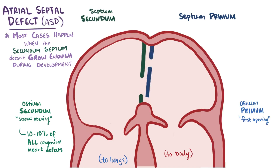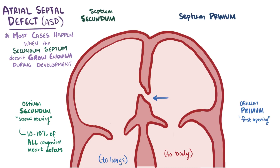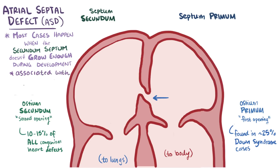Fewer ASD cases are due to the ostium primum, where the first opening or ostium primum doesn't make it all the way down, again leaving an opening between the right and left atria. This primum type of congenital defect is found in around 25% of patients with Down syndrome. Atrial septal defects in general are also commonly associated with fetal alcohol syndrome.